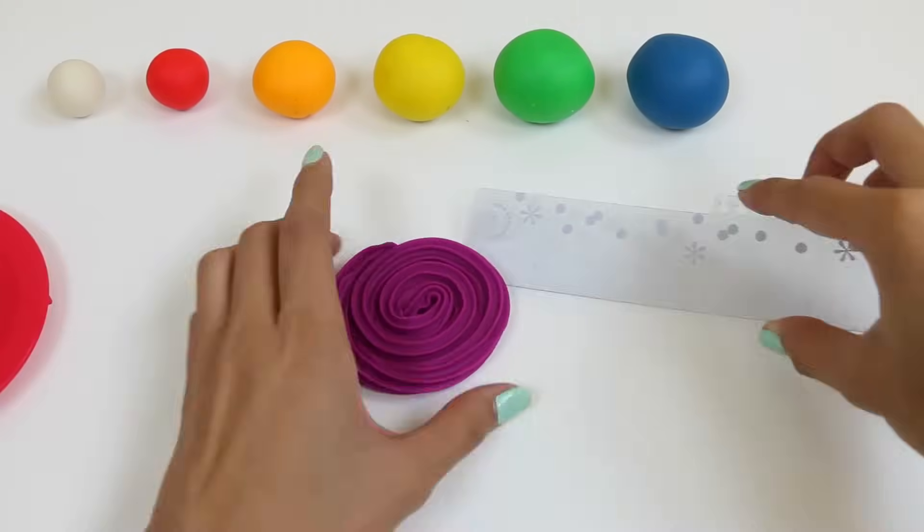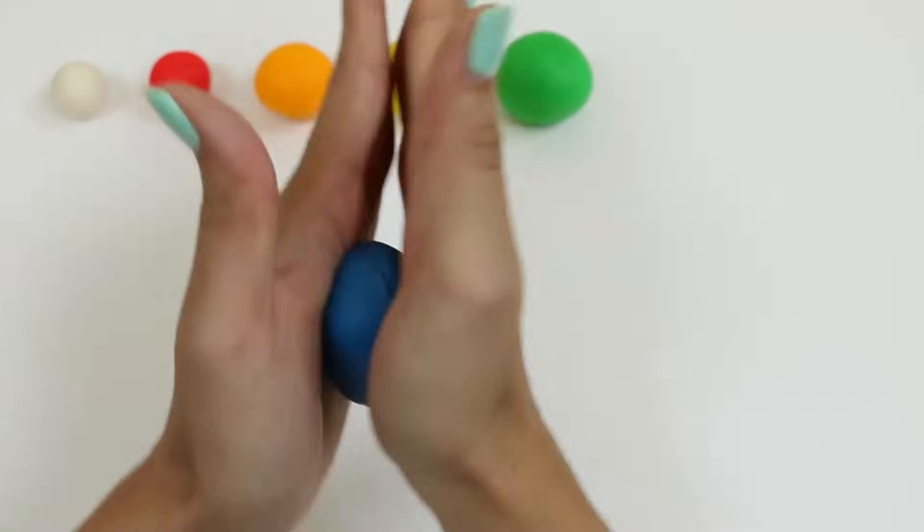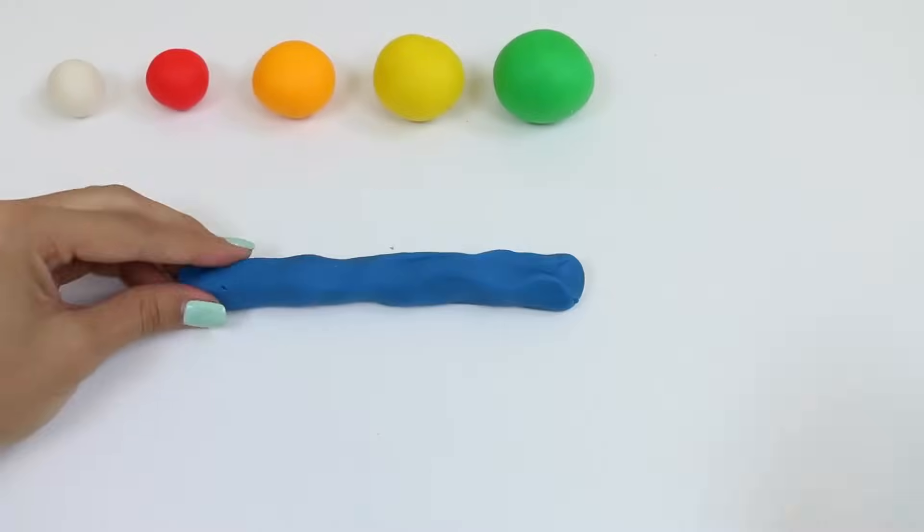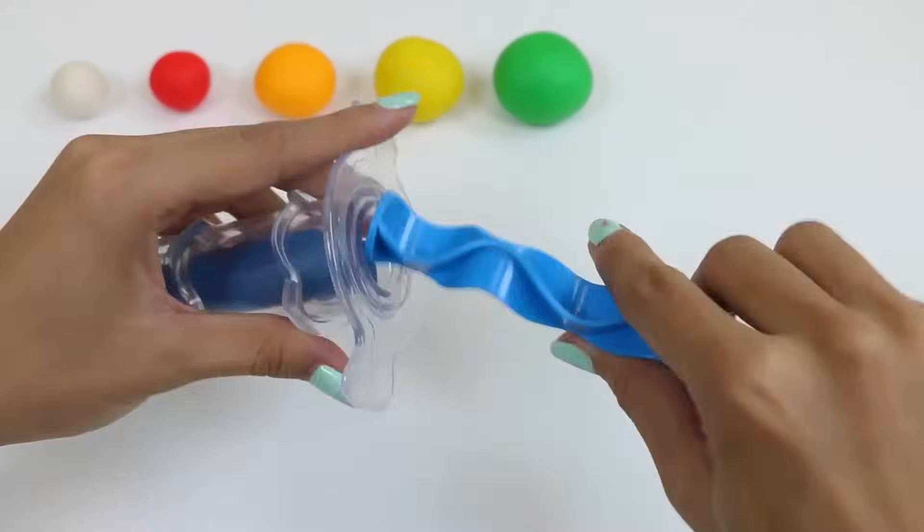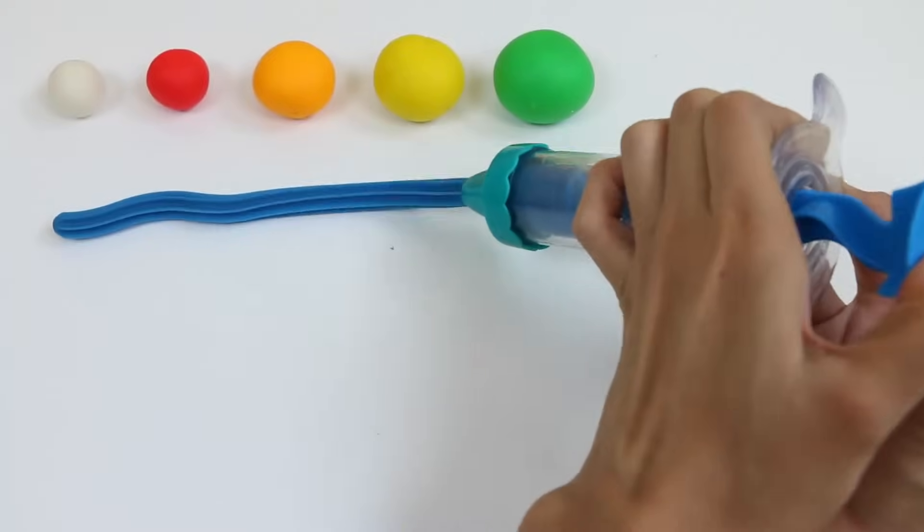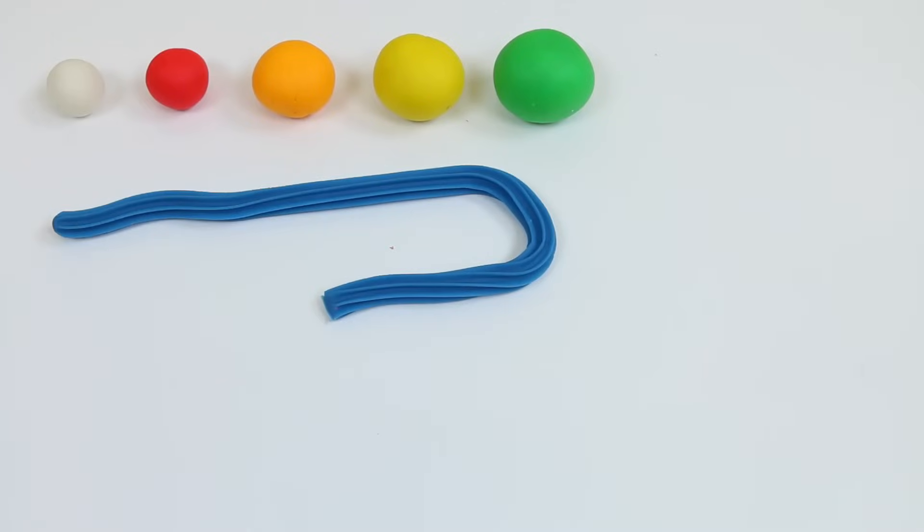Now for the blue one, we're gonna make this one slightly smaller than the purple one. Hmm, if this was ice cream I think it'd be blueberry ice cream. Now we do the same thing and just swirl it around.